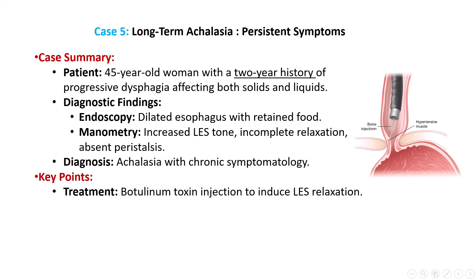Finally, consider a 45-year-old woman with a two-year history of progressive dysphagia now affecting both solids and liquids. Despite using antacids, her symptoms persist. Upper endoscopy reveals a dilated esophagus with retained food, and manometry shows increased LES tone and incomplete relaxation with absent peristalsis in the distal esophagus. This presentation is typical of achalasia, where immune-mediated destruction of inhibitory ganglion cells results in increased LES tone. Botulinum toxin, which prevents acetylcholine release at the neuromuscular synapse, can be used therapeutically to induce LES relaxation and improve symptoms.